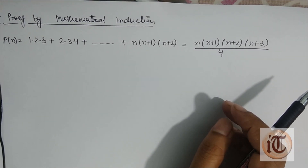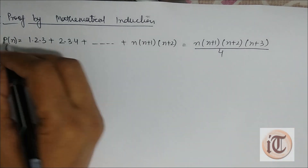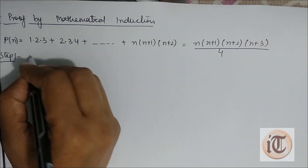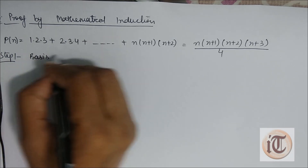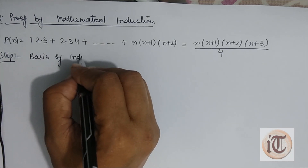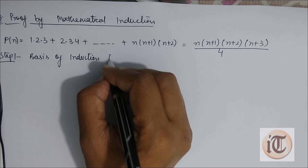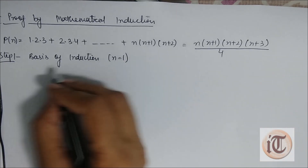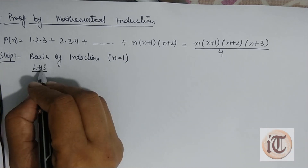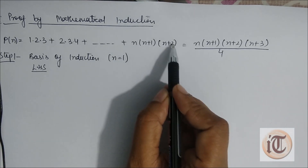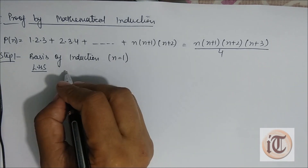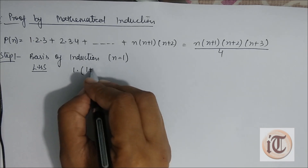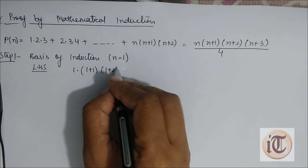Step 1 is the basis of induction, in which we take n equals to 1. In the left hand side, instead of n we put 1, so it will become 1·(1+1)·(1+2), which is 1·2·3.